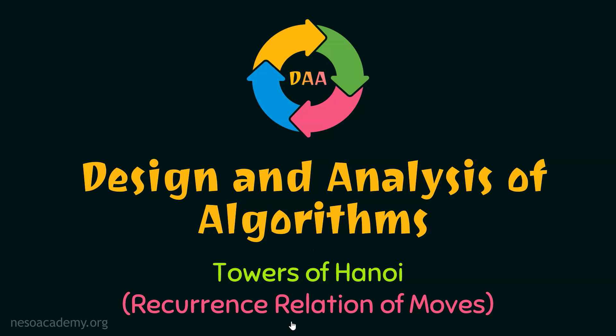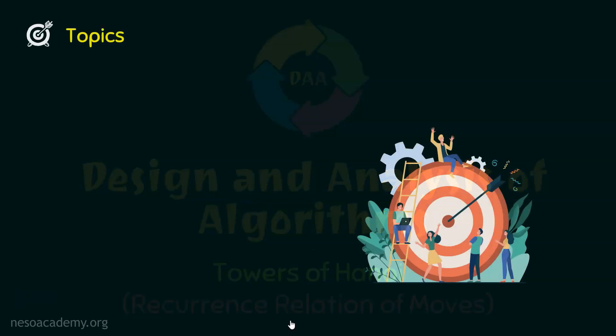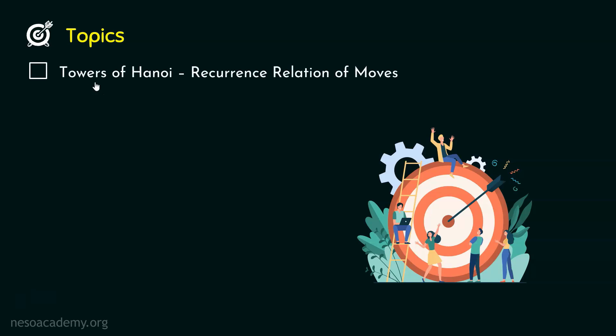If we have n disks, then how many moves do we need in order to transfer n disks from one peg to the other? We are interested in knowing the number of moves, and we can get the number of moves from the recurrence relation of moves. That is why it is important to write the recurrence relation of moves of Towers of Hanoi from the algorithm. The topic of this lecture is Towers of Hanoi: Recurrence relation of moves.